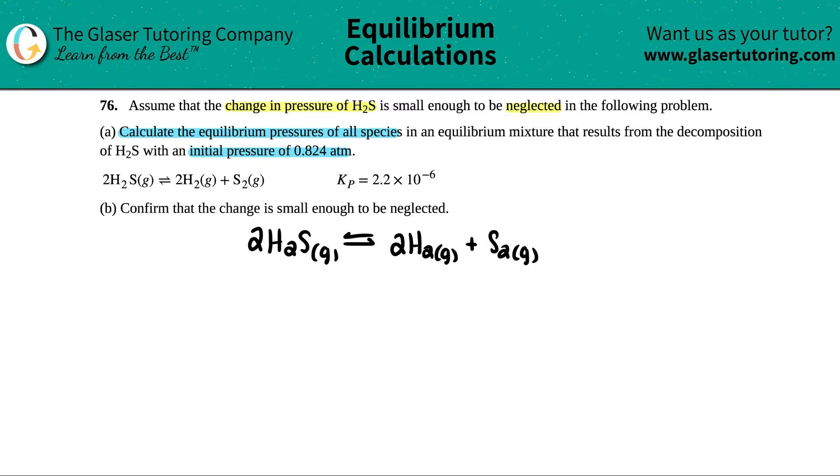Now, they did say that we need to calculate the equilibrium pressures of all species. If they do say all species, that just means all of the compounds or the molecules in the balanced equation. So I basically have to find out the equilibrium pressure of H2S, H2, and S2 at equilibrium.